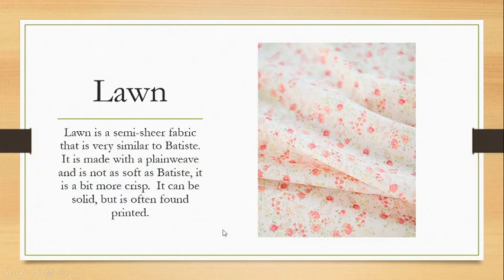Our next fabric is lawn. Batiste, lawn, and voile are three categories that are all very similar with very small differences — if you mix them up, you're kind of forgiven. Lawn is also a semi-sheer fabric very close to batiste; it's made with a plain weave but is a bit more crisp. Lawn doesn't need to be printed but often is — if you find a semi-sheer, semi-crisp cotton with a print, it's typically lawn.